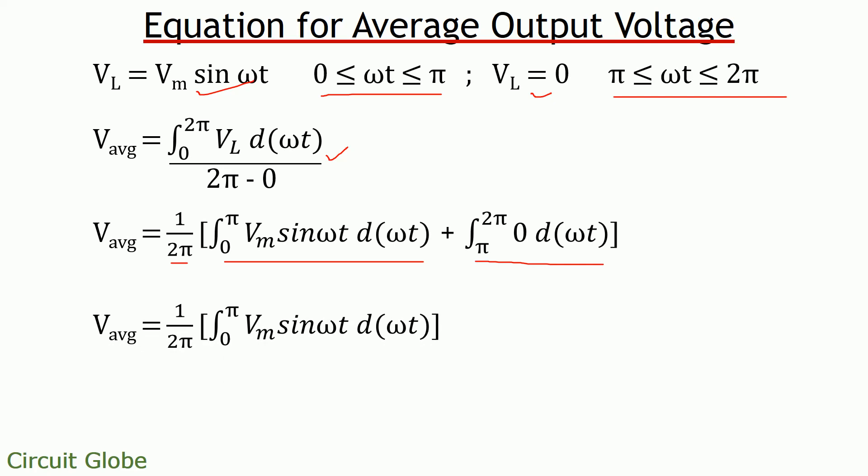Thus we achieve V average as this equation. Now taking the constant term out and integrating sin omega t d omega t we get V average is equals to Vm upon 2 pi minus of cos omega t under the limits 0 to pi.